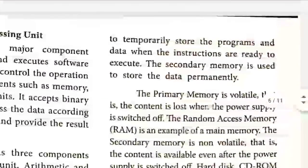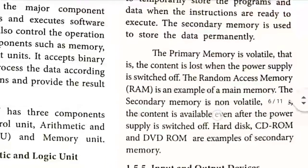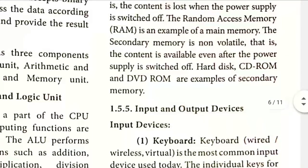The example for primary memory is RAM — Random Access Memory. The example for secondary memory, which is permanent memory, is ROM — Read-Only Memory. RAM is a series of chips attached to the motherboard. ROM, or secondary memory, refers to the hard disk drive, which consists of magnetic disks on which information is stored.